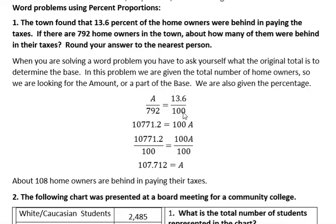We don't know A, the amount, which is the part of the people that aren't paying their taxes. Now I'm going to set that up and cross multiply: 792 times 13.6 — those are the means — then 100 times A — those are the extremes. My coefficient in this problem is 100, so I divide both sides by 100. That gives me A equals 107.712.